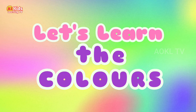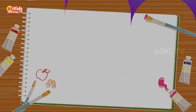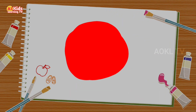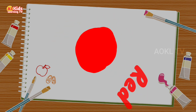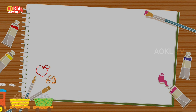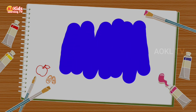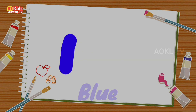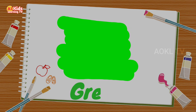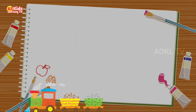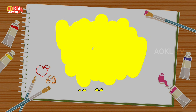Let's learn the colors. This is red color. This is blue color. This is green color. This is yellow color.